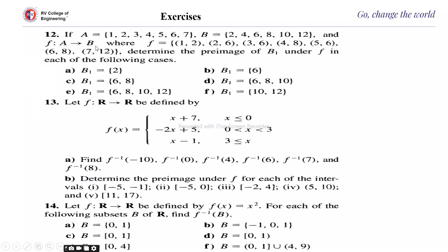Now let us see one more example with discrete values. Suppose A = {1, 2, 3, 4, 5, 6, 7}, B = {2, 4, 6, 8, 10, 12}, and f is a function from A to B given by the pairs: (1,2), (2,6), (3,6), (4,8), (5,6), (6,8), (7,12). Determine the preimage of B₁ under f in each of the following cases.